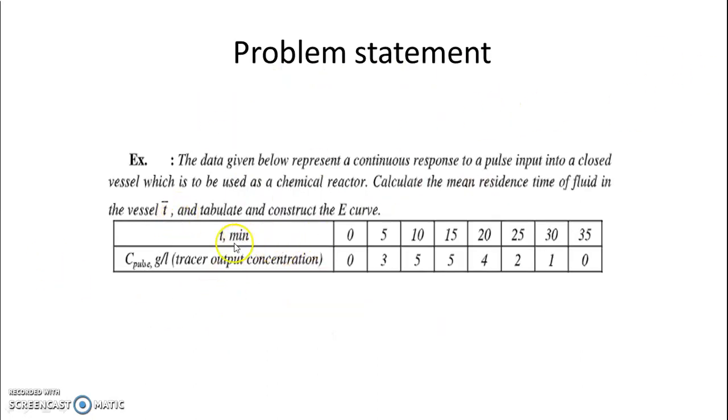Now this is the numerical statement. T is given for RTD experiment. C is given with respect to all T. What we have to find? We have to find the mean residence time of the fluid, that is T bar. We have to tabulate and construct the E curve also. This is the problem.